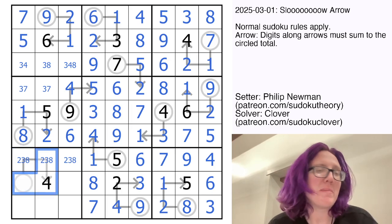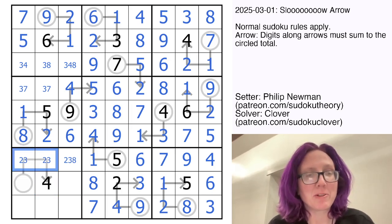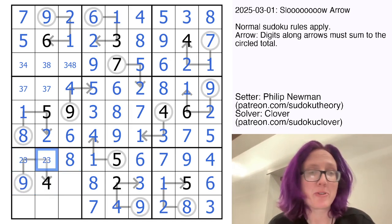Now I can't put an eight on this arrow. That would give me a minimum of twelve, which is definitely not going to work. So that's two, three, four, summing to nine. And that actually resolves.